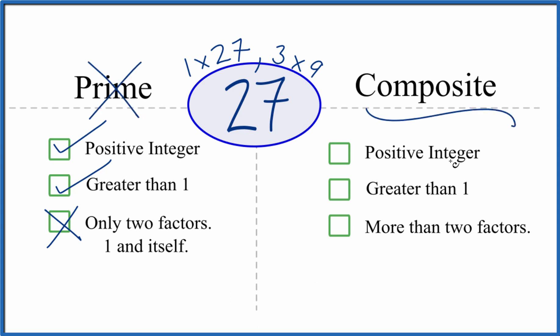But is it composite? Because it's a positive integer and it's greater than 1, we have more than two factors. 1, 2, 3, 4. That makes 27 a composite number.